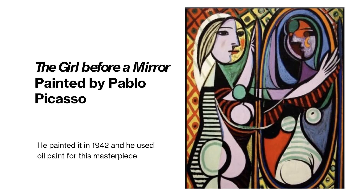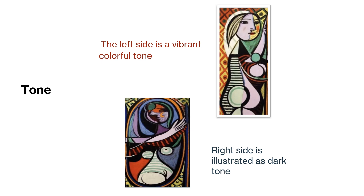So the piece that I'll be talking about is the Girl Before a Mirror, painted by Pablo Picasso. He painted it in 1942 and he used oil paint for this masterpiece.